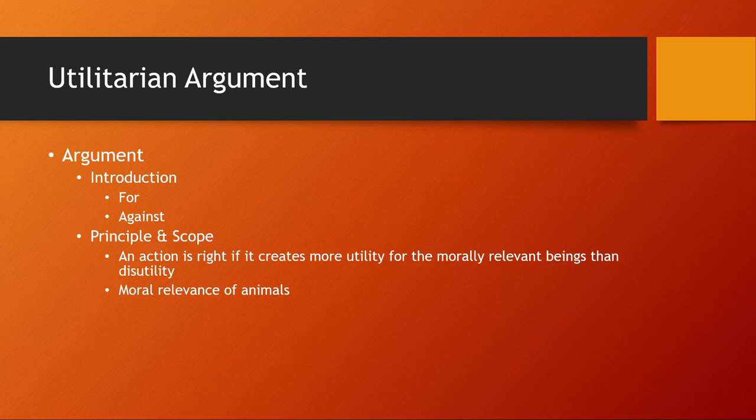Not surprisingly, many people — philosophers and non-philosophers — who want to argue for treating animals better often embrace utilitarian arguments, either consciously and academically, where they explicitly argue within utilitarian theory, or informally, where they're adopting utilitarianism perhaps without being aware of the theory. So utilitarian arguments are commonly used to argue in favor of better treatment of animals.